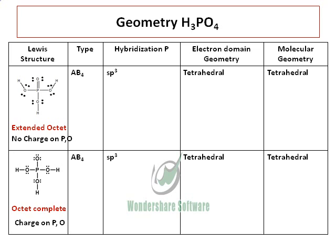Both are AB4 type molecules. The hybridization of the central phosphorus is SP3, and it has an electron domain geometry of tetrahedral, and the molecular geometry is also tetrahedral because there are no lone pairs. So phosphoric acid, as I keep mentioning, is a special case and has got two Lewis structures.